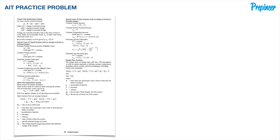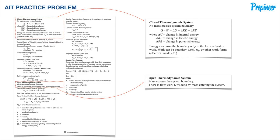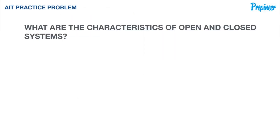We can get a general definition of these two systems by turning to page 89 of the NCES reference handbook, focusing on the left column where we find definitions of a closed and an open thermodynamic system. Back on our slide highlighting the characteristics of open and closed systems, let's cover key points needed both for this conceptual AIT problem and for the quantitative problems in the thermodynamics section of the exam.